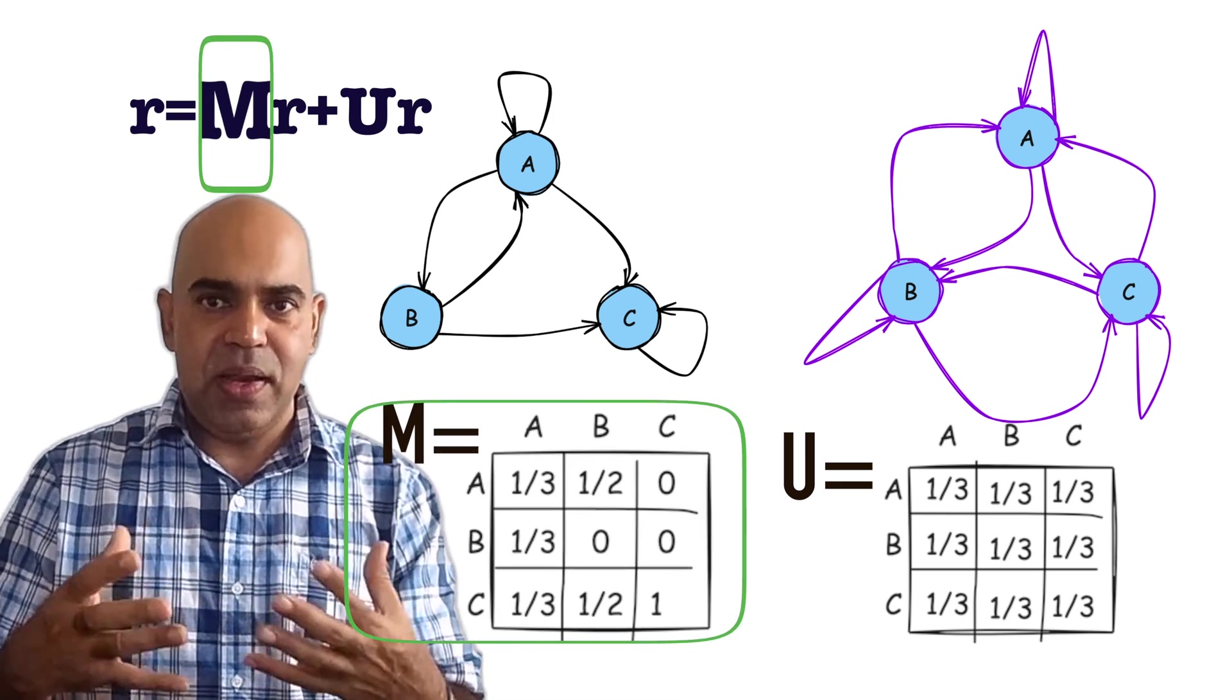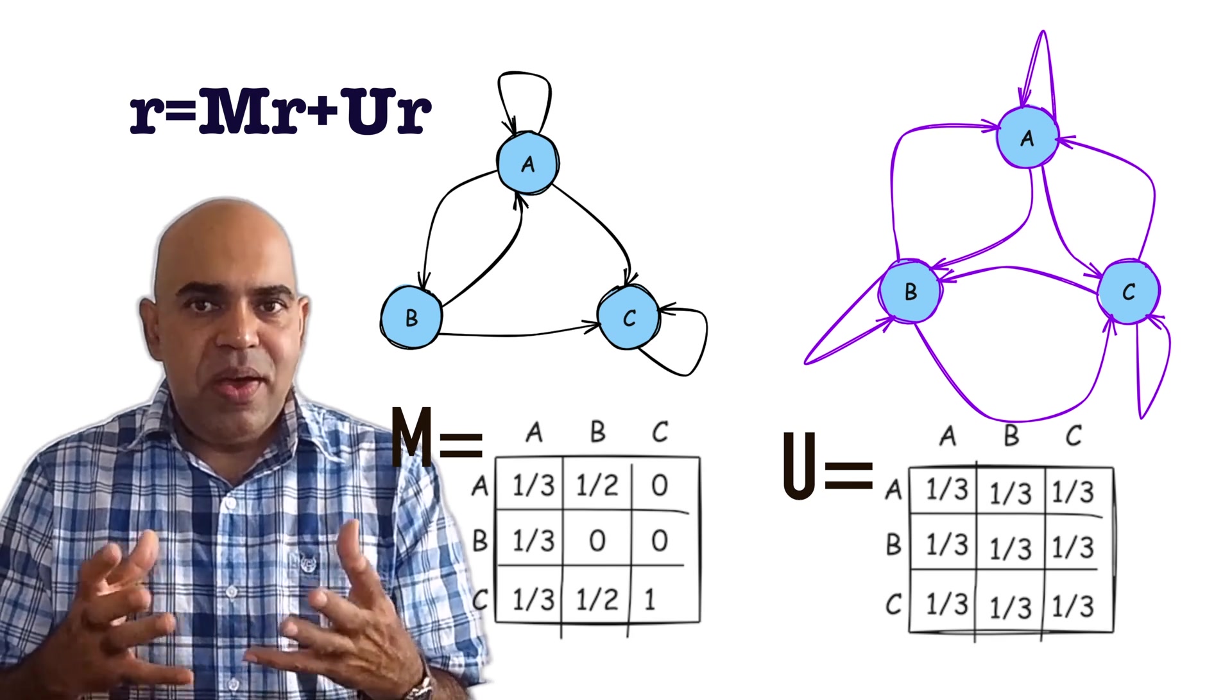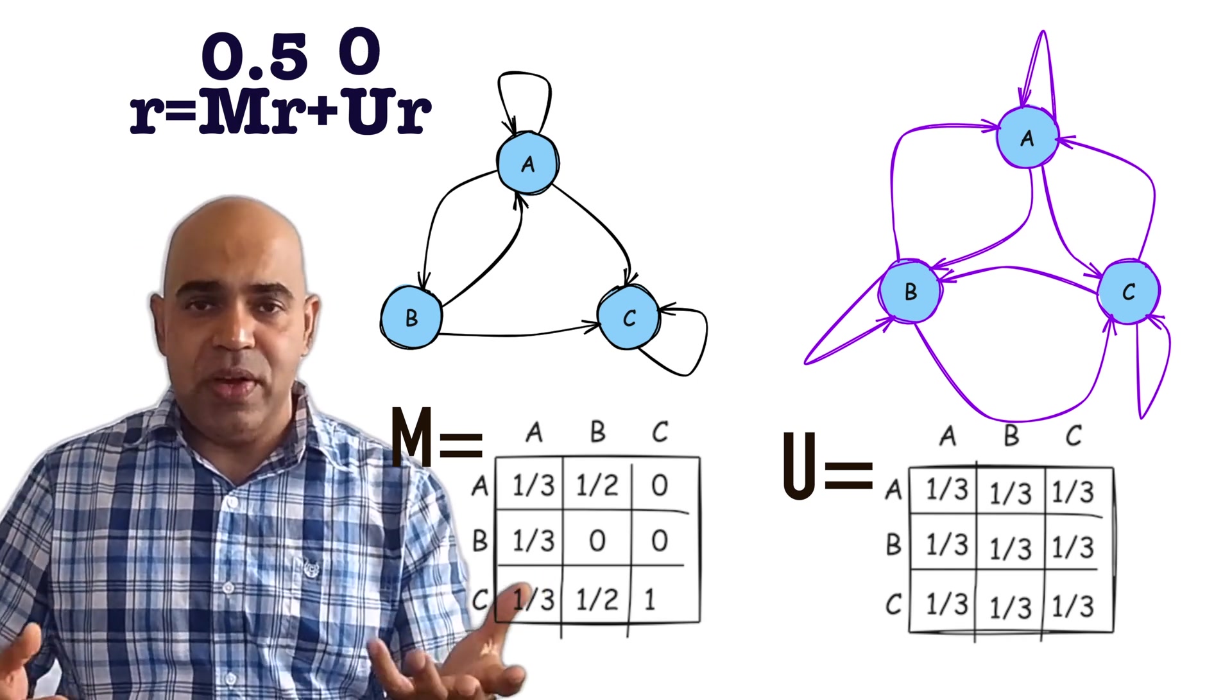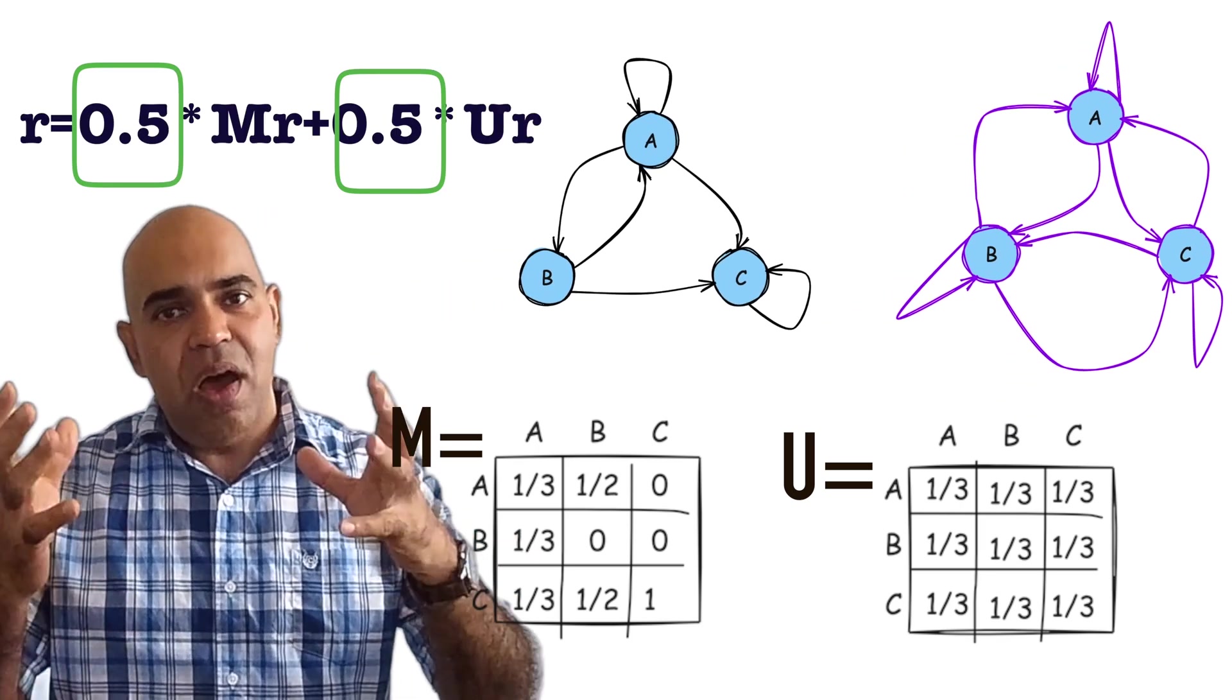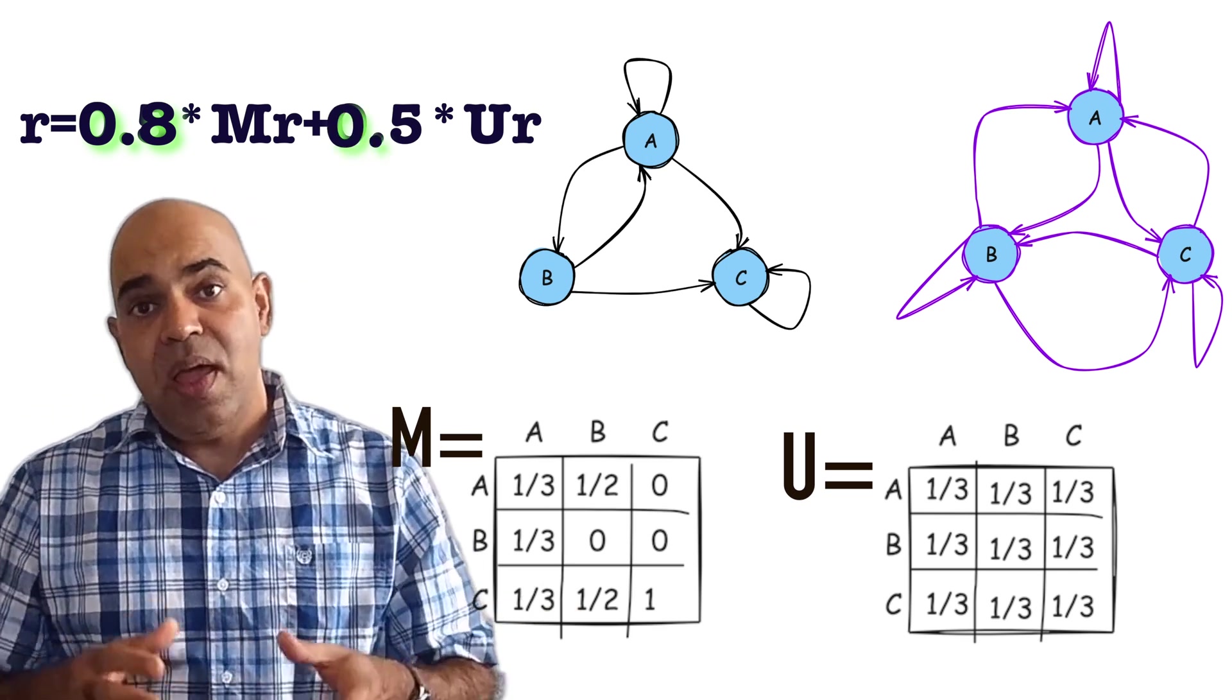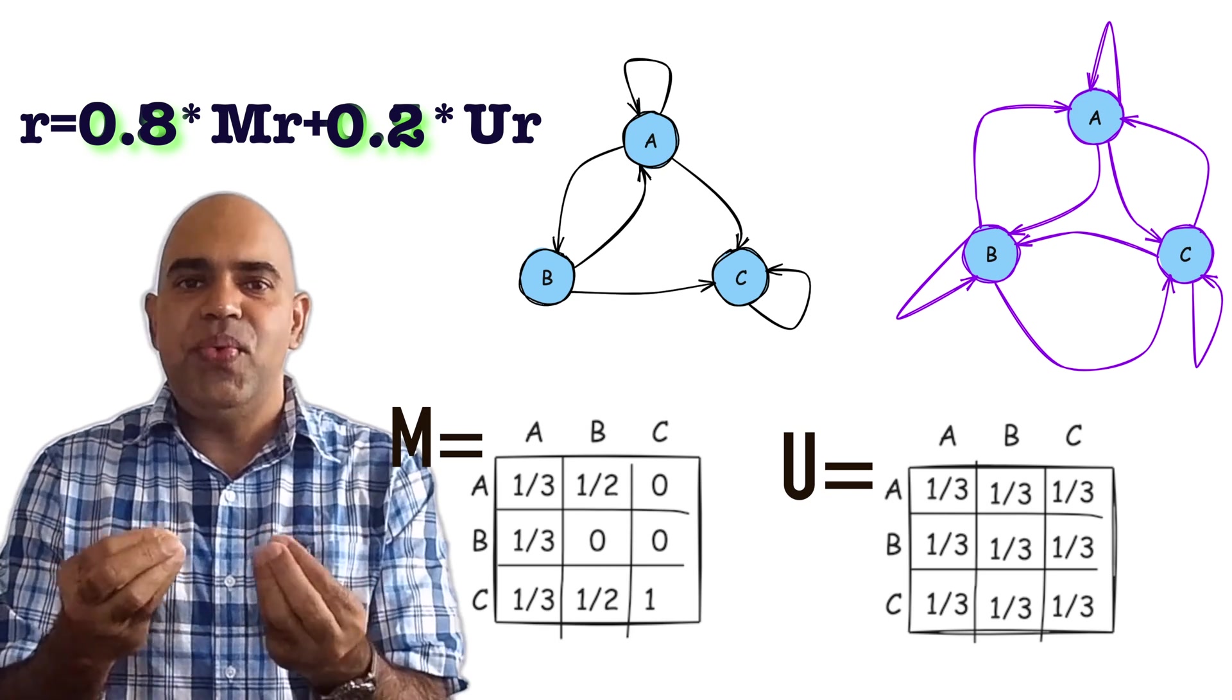Here, both the hyperlink network transition matrix M and teleportation network transition matrix U have equal importance. It will not hurt to say that half the rank vector is coming from the actual hyperlink internetwork and the other half of the rank vector is coming from the teleportation part. Why should we put this half, 0.5, in the equation? We could say 0.8 of the rank vector should come from the actual hyperlink internetwork and 0.2 part should come from the teleportation internetwork.